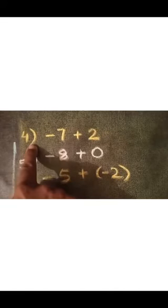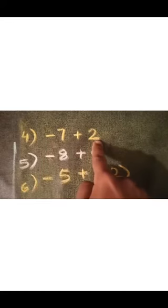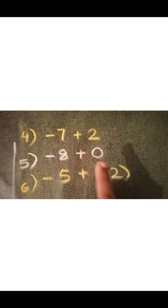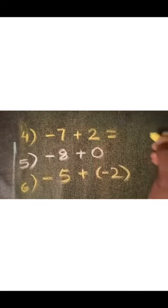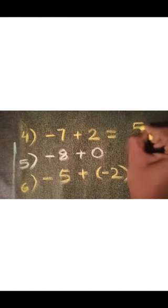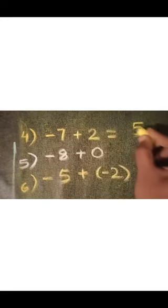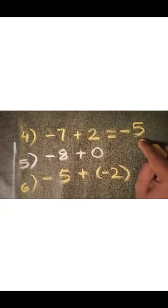Question number 4: minus 7 plus 2. Here 7 is a negative integer and 2 is a positive integer. When adding integers with different signs, ignore the sign and subtract the smaller number from the bigger one. So 7 minus 2 equals 5. The bigger number is 7 and 7 is a negative integer, so we give it a minus sign. The answer is minus 5.